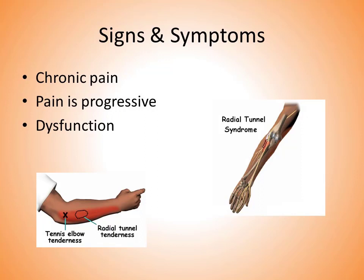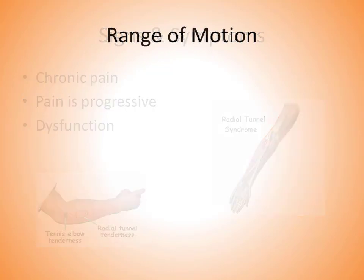The person will also complain of dysfunction with supination and pronation. Therefore, range-of-motion-wise, the patient will have decreased supination and pronation, as well as wrist extension and flexion.